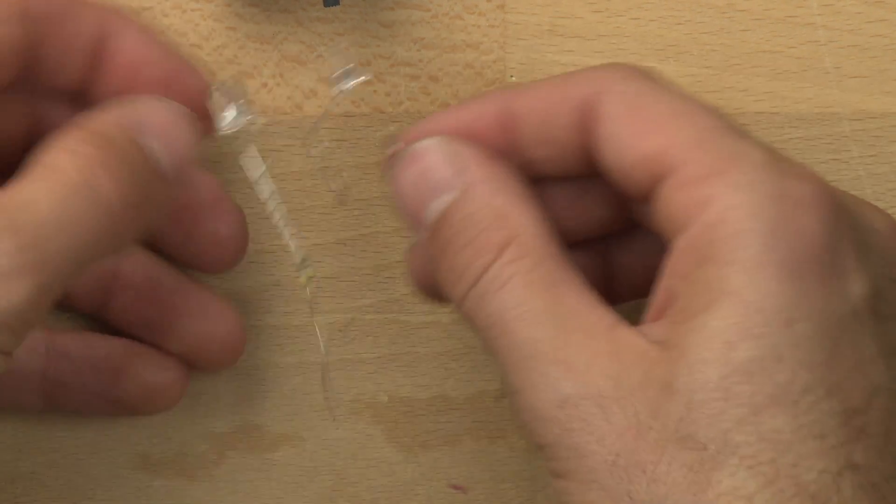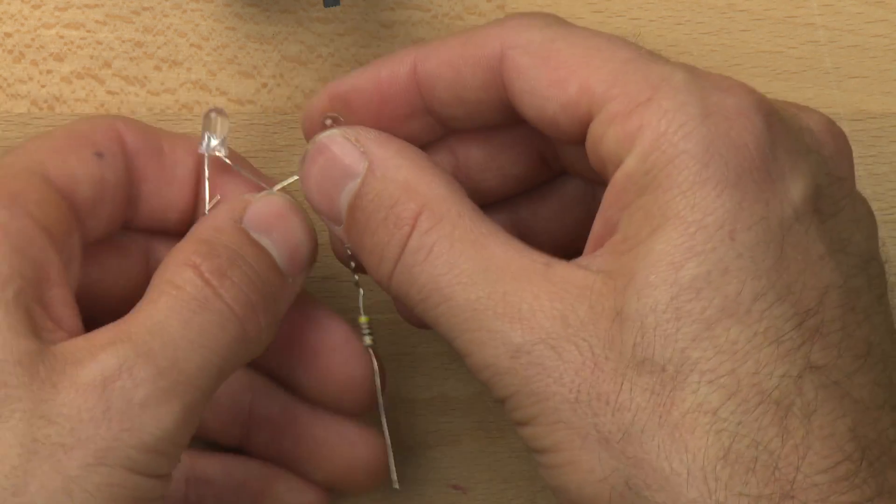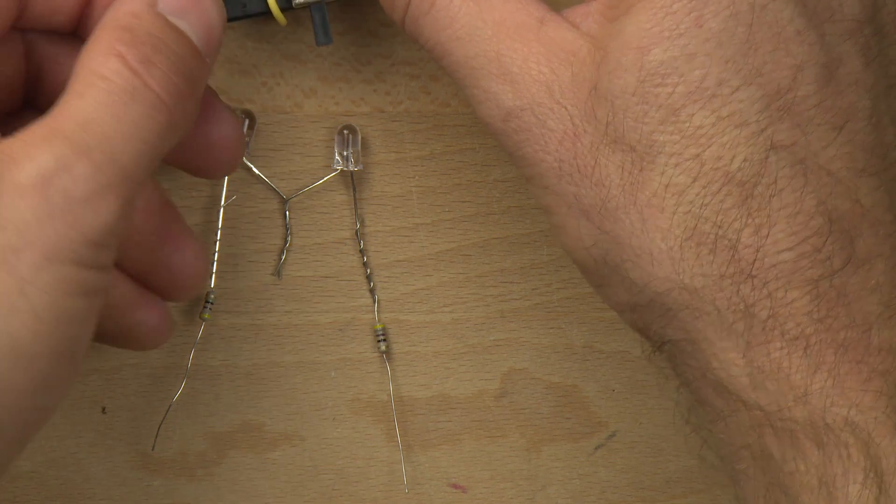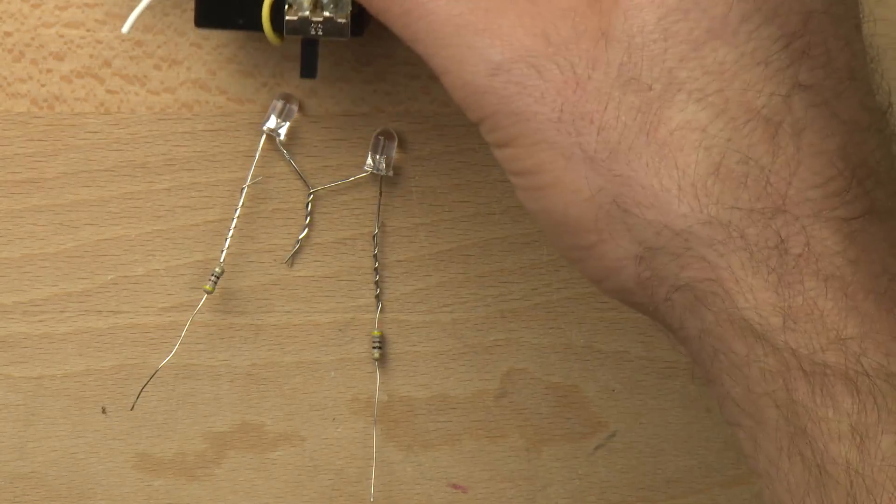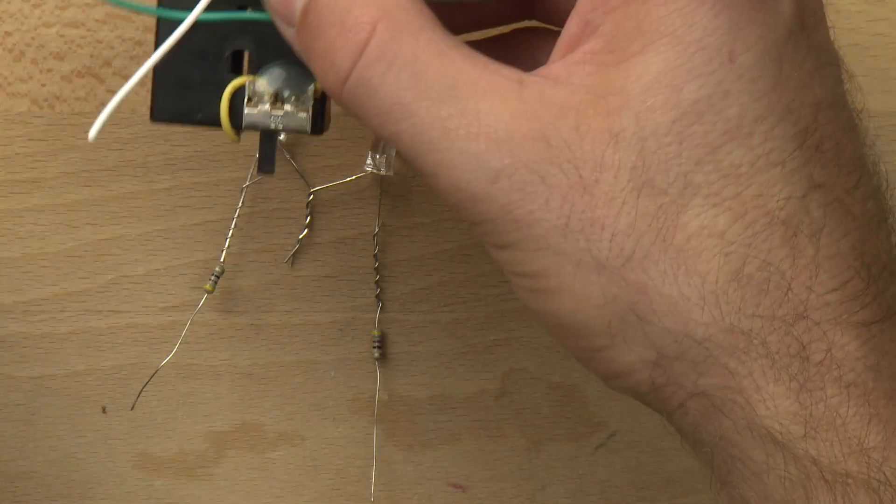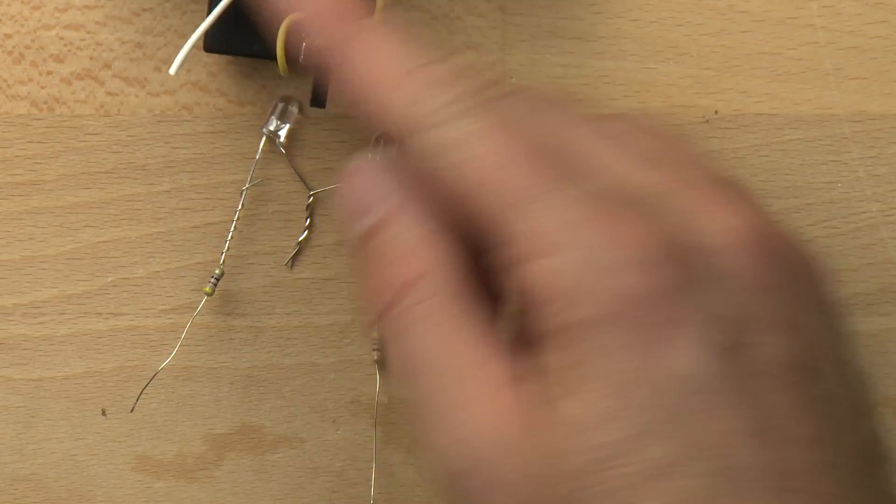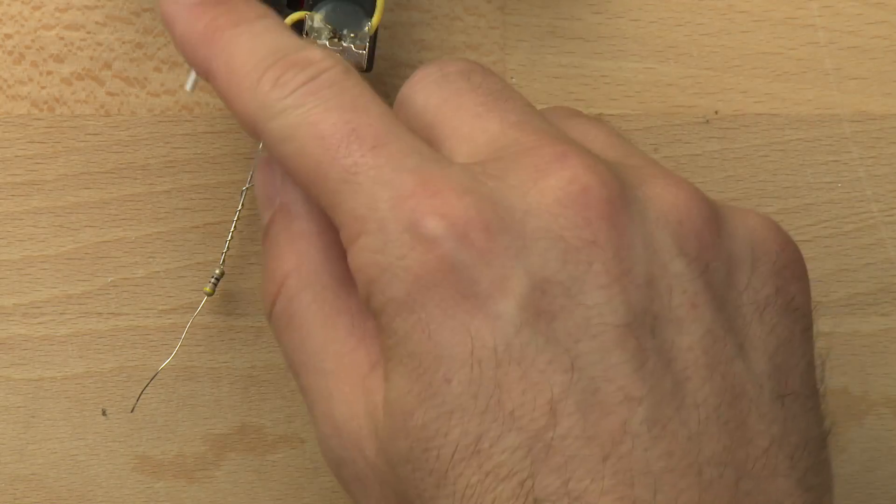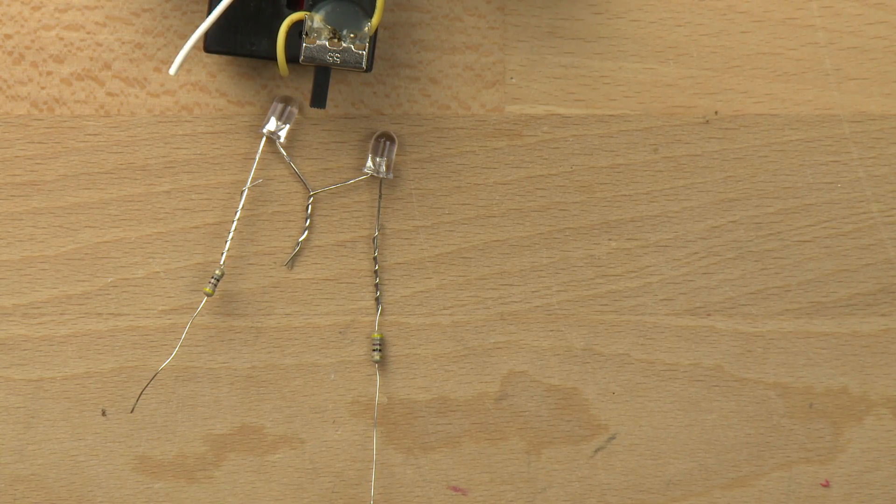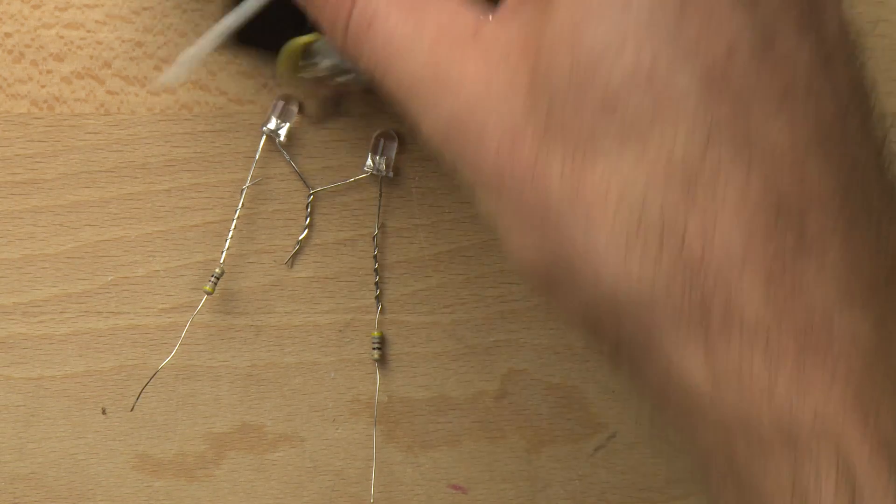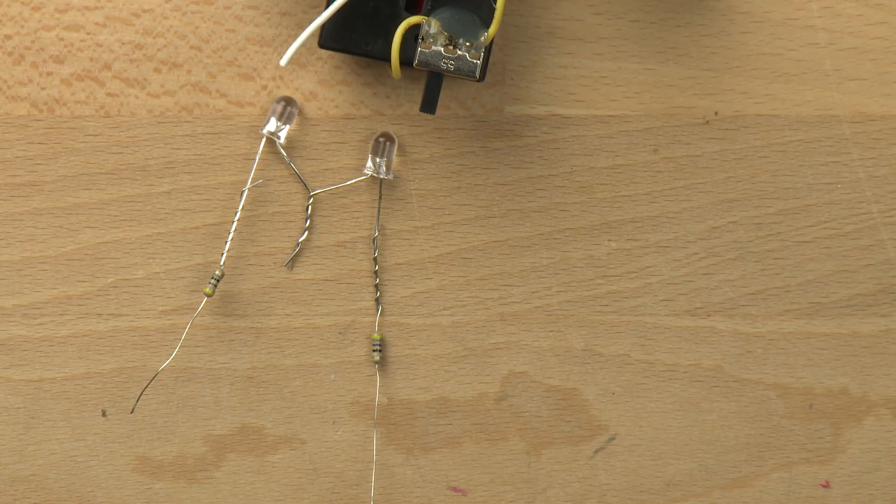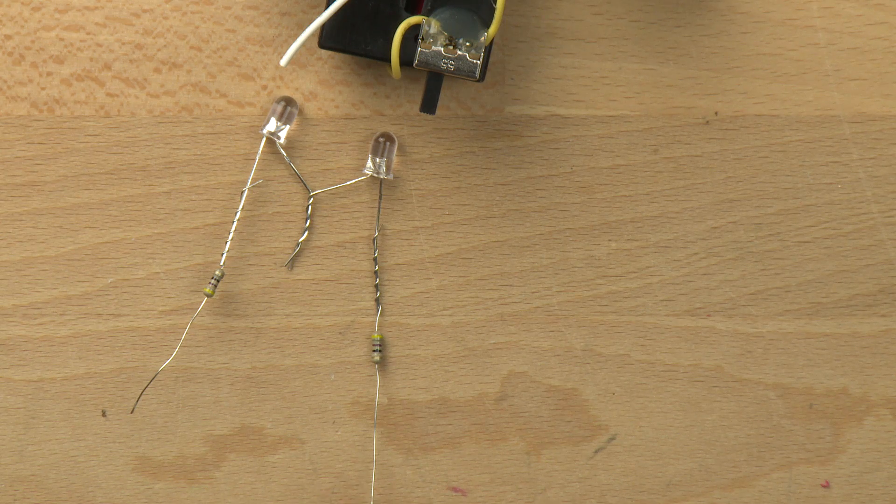All right, so we've got a lot of pieces that are connected there. Now remember, we've got our negative from our battery. Our battery is here and it looks like the positive may have come off, so we can add that back.